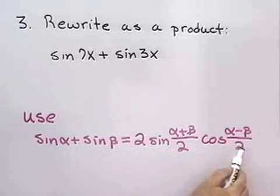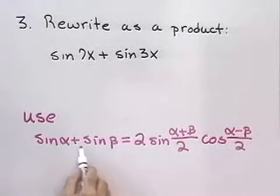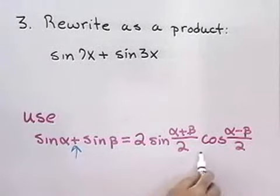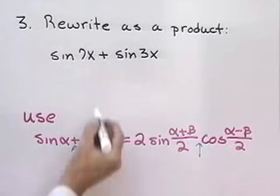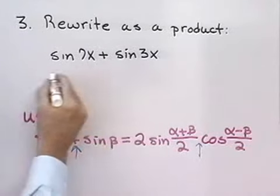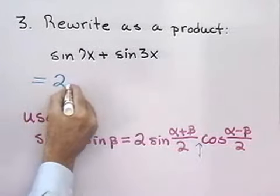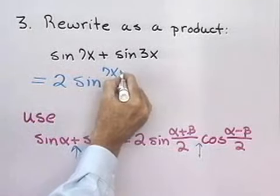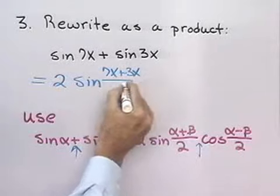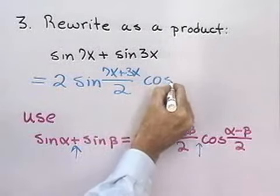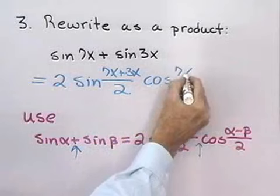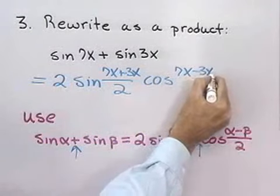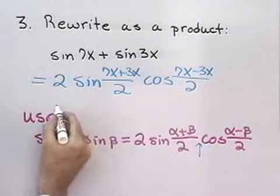What's nice about this formula is it takes addition and rewrites it as multiplication. And so, that's what we want to do. We want to take this sum and rewrite it as a product. So, alpha is 7x, beta is equal to 3x. This is going to be equal to 2, sine of 7x plus 3x over 2, cosine of alpha minus beta over 2, 7x minus 3x over 2.